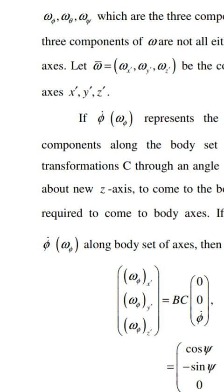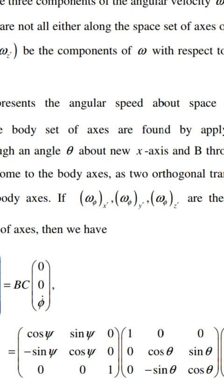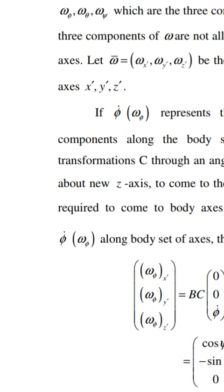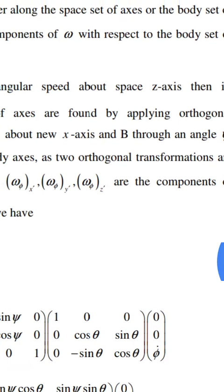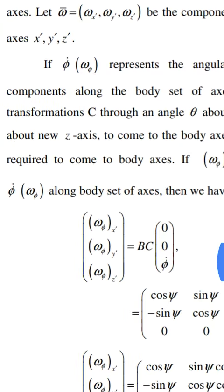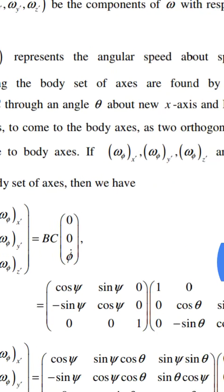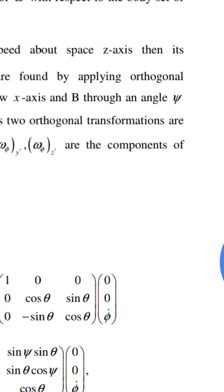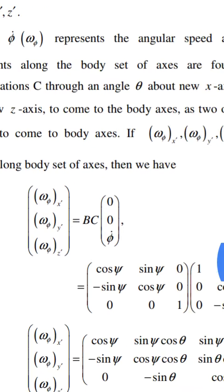If phi_dot (omega_phi) represents the angular speed about the space z-axis, then its components along the body set of axes are found by applying the orthogonal transformation C through an angle theta about the new z-axis, to convert to the body axes.